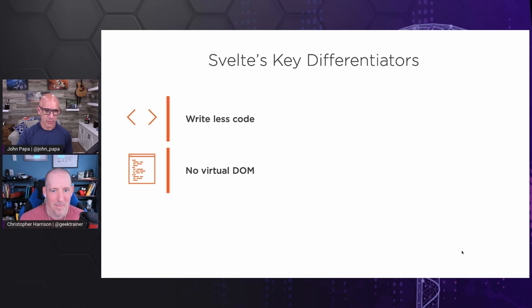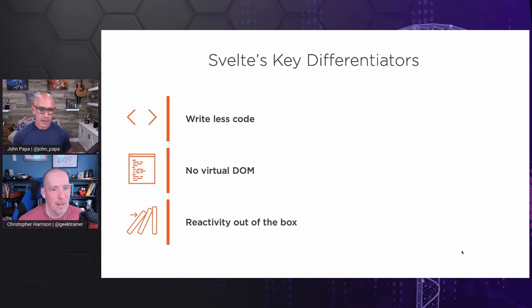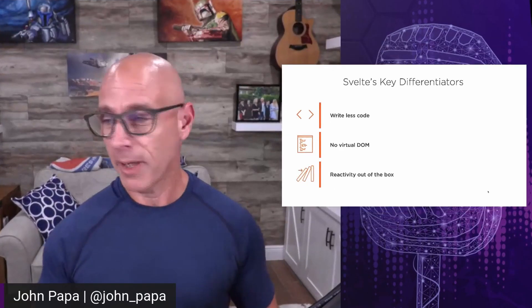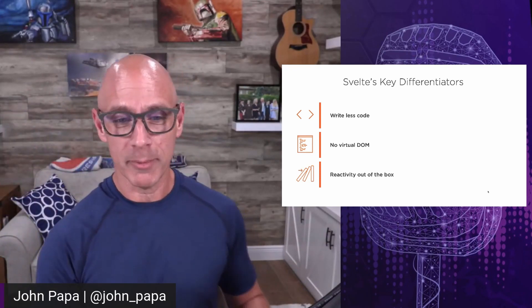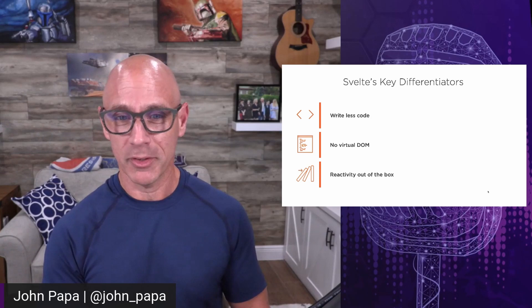We hear about the virtual DOM all the time with things like React, and that's great, but Svelte doesn't deal with the virtual DOM. The DOM itself is a document object model — every browser has one. Years ago, the DOMs in the browsers were different in each version of each browser, which meant as a web programmer I was coding with a lot of if-then statements in JavaScript for every version of every browser, and it was not fun. The virtual DOM is effectively a DOM that sits side-by-side with the DOM; you can manipulate it and then insert it into the DOM itself. It's a way to make updates, get rid of flicker and refresh, and make the browser go faster.